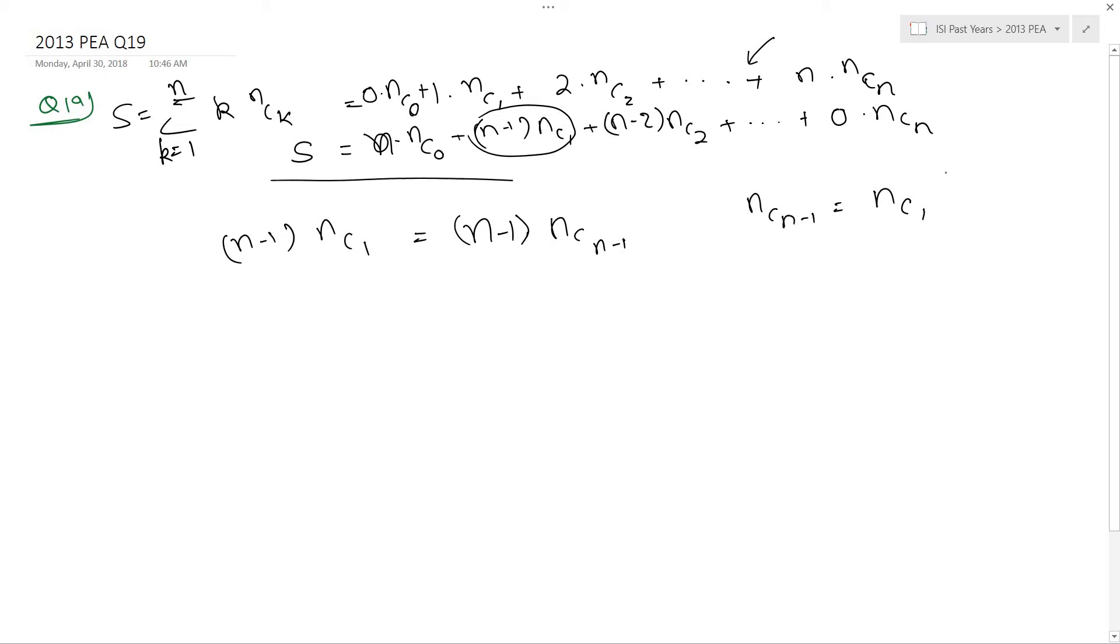Now, when I add these two sequences up, I get 2s equals n into n c 0 plus n into n c 1 plus n into n c 2 and so on till n into n c n.